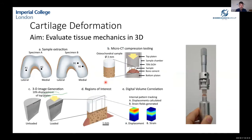Moving on, now that we had developed the technique to image cells, we wanted to apply compression and look at tissue mechanics in 3D. We moved to human donors — two different donors, two samples each — taking a three-millimeter plug and loading it into a loading rig I developed, enabling compression within the micro-CT scanner, followed by DVC analysis.